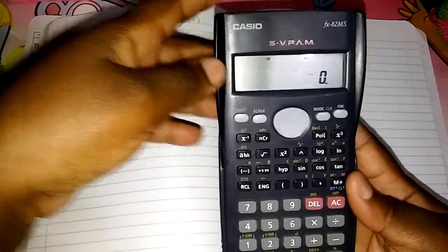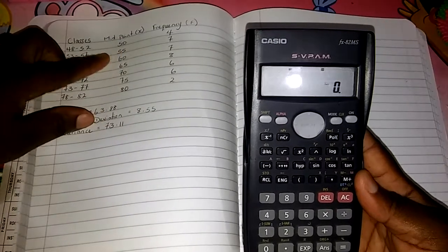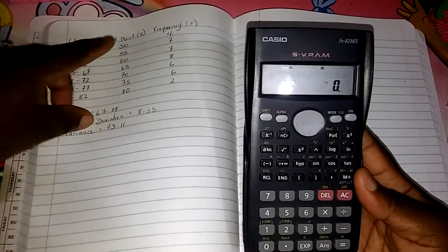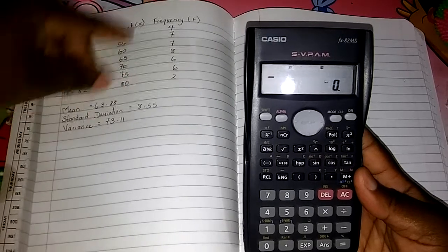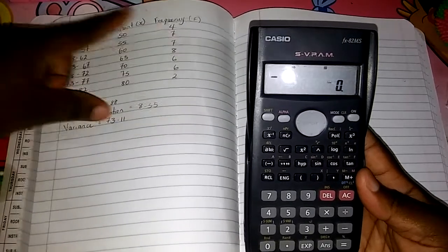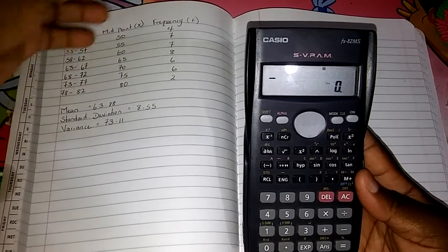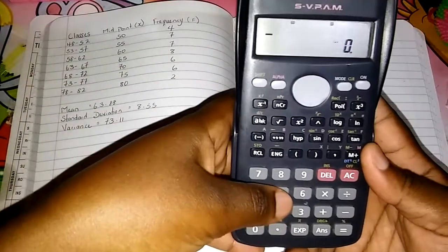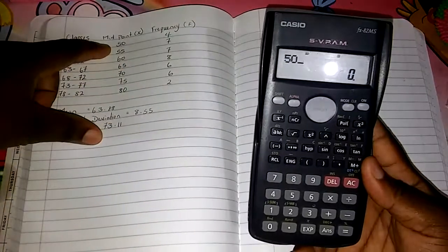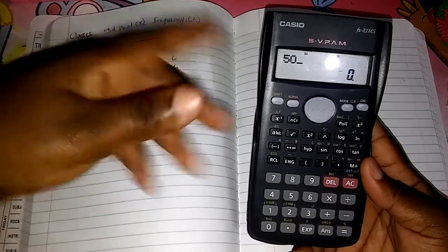All right, then we have to add these values to the calculator—the midpoint. All these we need first, and then we're going to add the frequency after. But first we need to add these. Same thing: x for midpoint, f for frequency. Let's work with this first. So the first value is 50. I'll put it in.